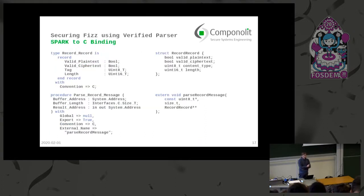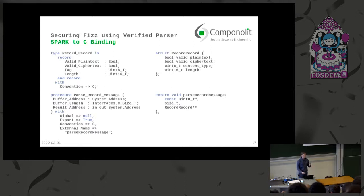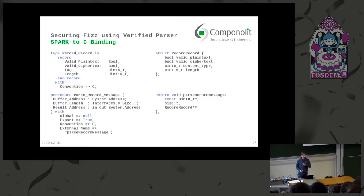We need a glue layer to integrate the parser into FIS. Since Spark data structures and C++ data structures are not compatible, Spark offers a foreign function interface. We can specify a record with convention C, giving it the same binary layout as a C struct — you see the Spark record on the left and the C struct on the right. The same is done for functions: we define parse_record_message with convention C and a defined name, and on the right side you see the C counterpart.